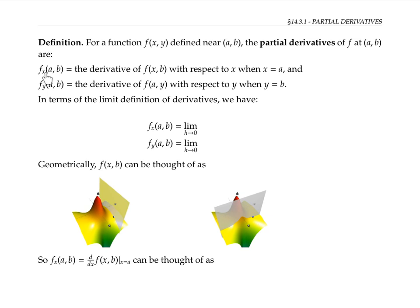When we write f_x(a,b), that means we hold y fixed at b and let x vary, and compute the derivative of f(x,b) with respect to x when x equals a. In other words, we're computing d/dx of f(x,b), thought of as a function of x at x equals a.